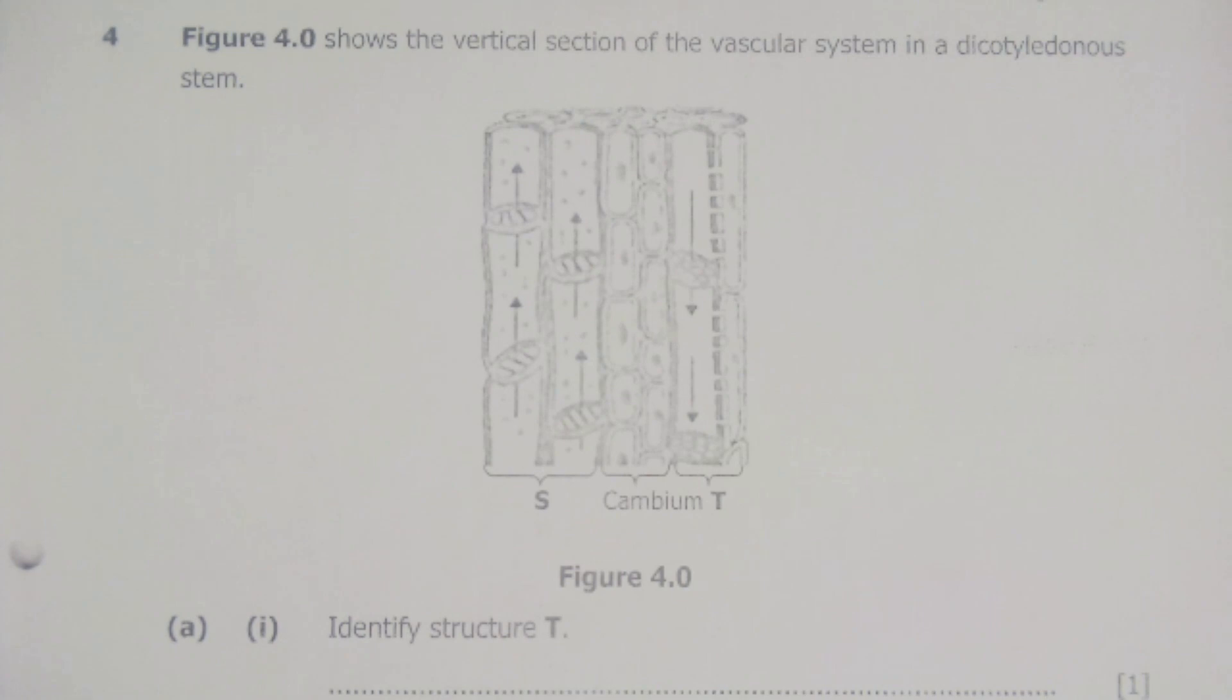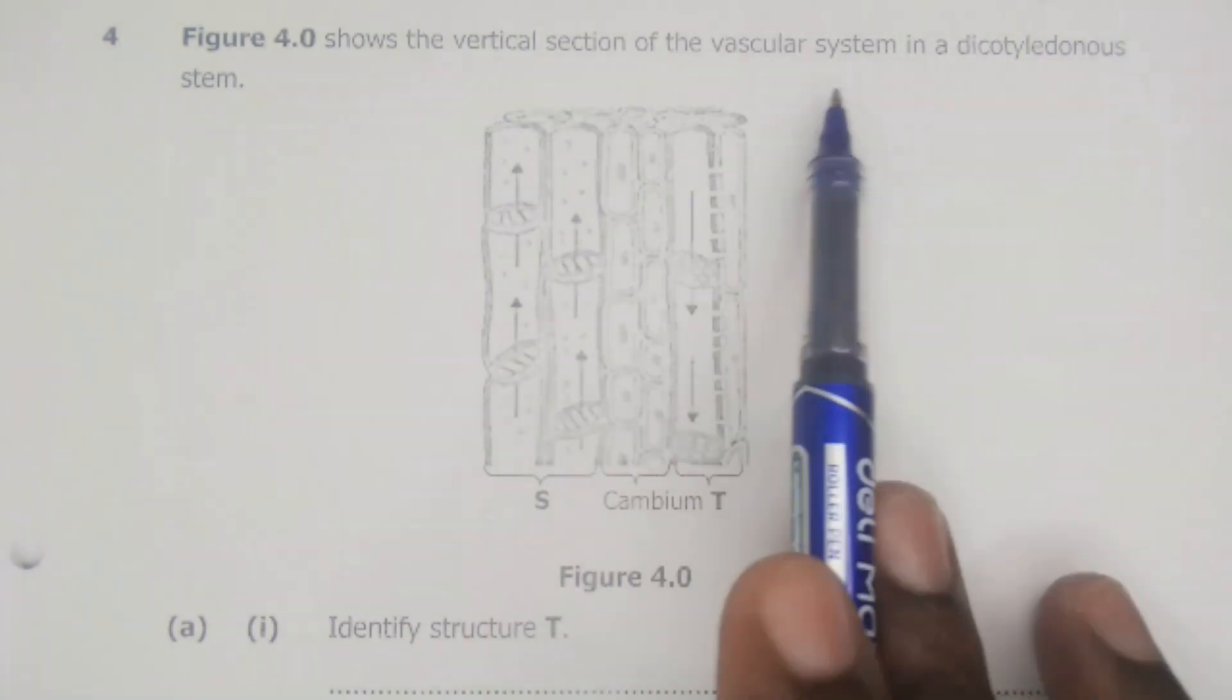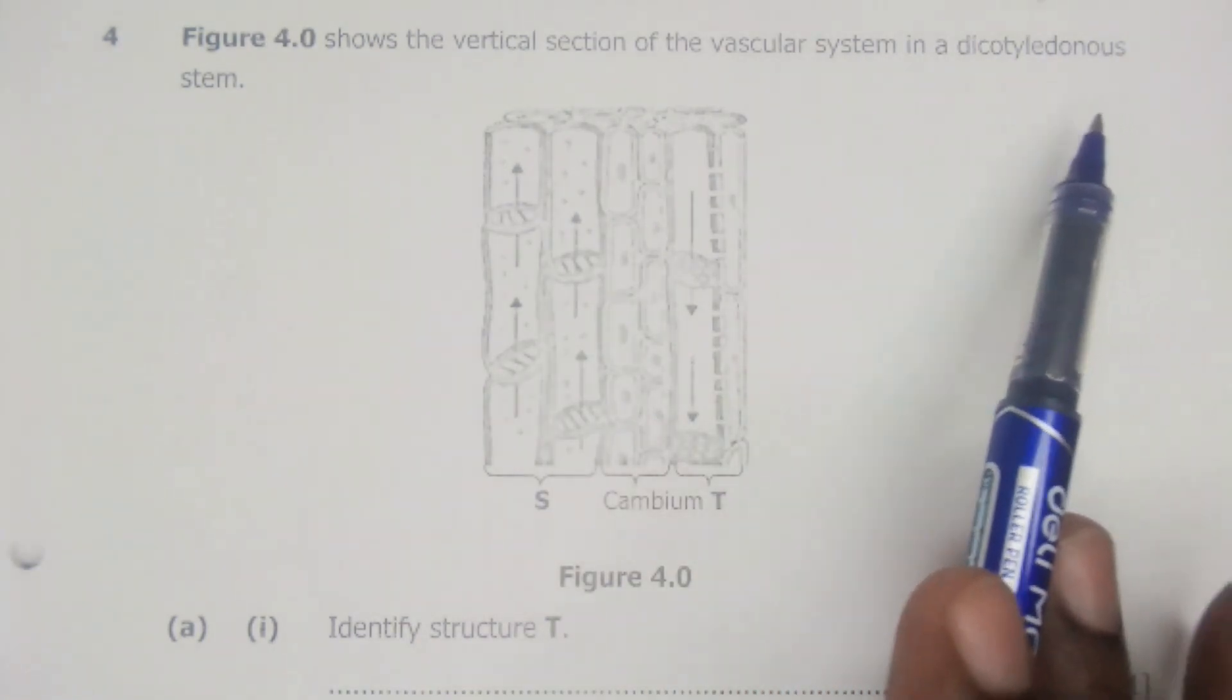Hello everyone and welcome. In this video we are going to look at the solutions to question number 4 for biology paper 2 for GCE 2018 examinations. This is question number 4 and it had figure 4.0. The question reads, figure 4.0 shows the vertical section of the vascular system in a dicotyledonous stem.